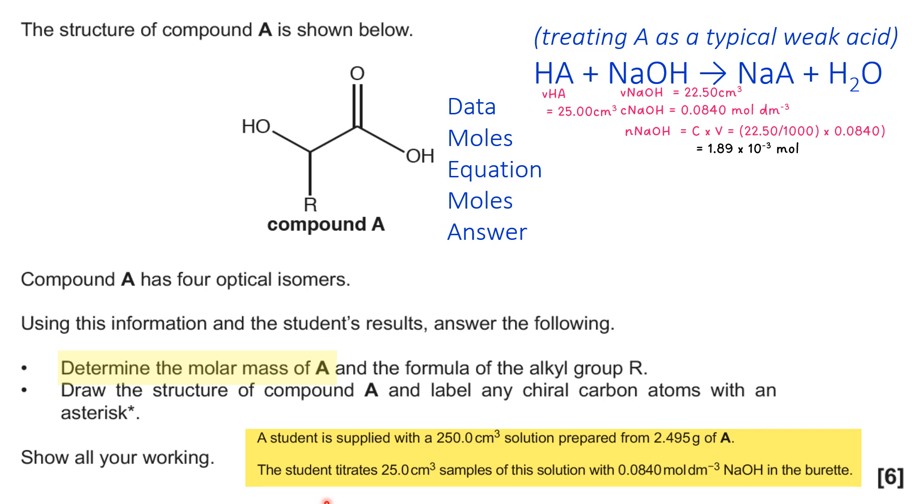So that means we can work out, because we have concentration and volume for sodium hydroxide, what the number of moles are. So I've put down the actual marking points in black so you can see them visually. So the first marking point is for working out the moles of sodium hydroxide. And in the equation, you can see it's a one-to-one ratio between A and sodium hydroxide. So therefore, the number of moles of A are going to be 1.89 times 10 to the minus 3. But that's in a 25 centimeter cubed sample. The original sample was 250. So you multiply that up by 10 to get times 10 to the minus 2. So the molar mass of A is the mass over the moles that are present in that 250 centimeter cubed. So that gives us 132.0 grams per mole.